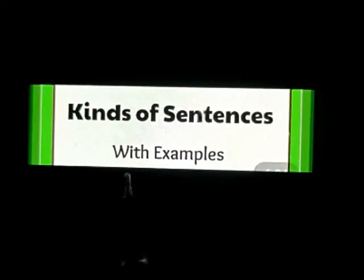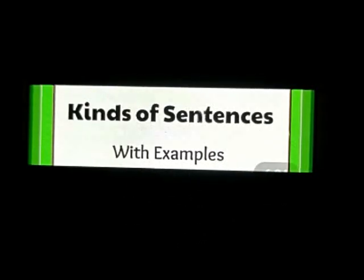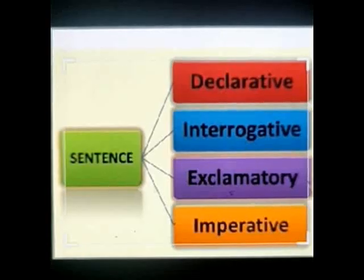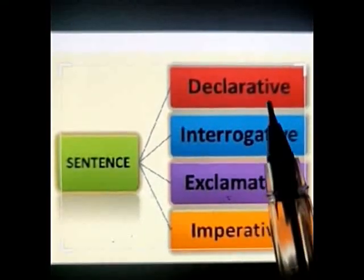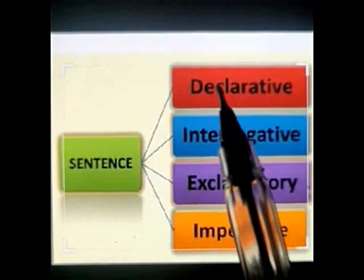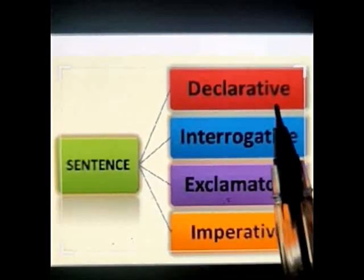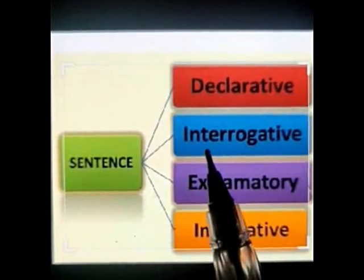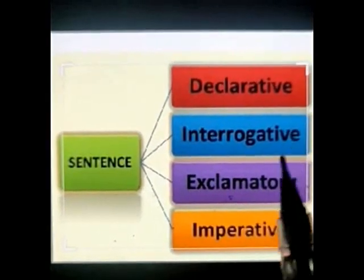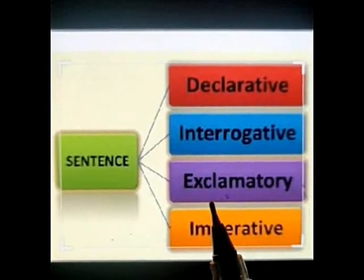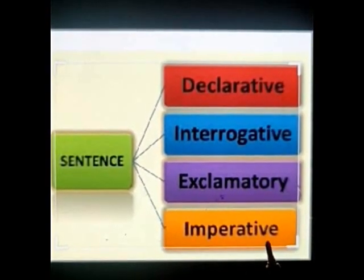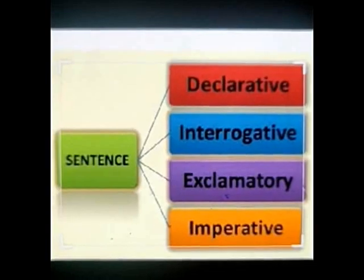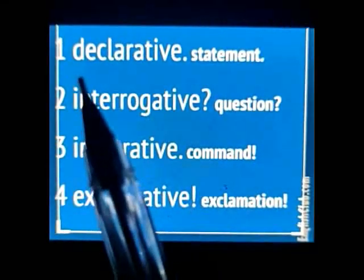Now we will learn about the kinds of sentences along with examples. There are four kinds of sentences: first is the declarative sentence, second is the interrogative sentence, third is the exclamatory sentence, and fourth is the imperative sentence.